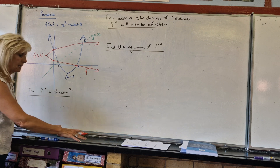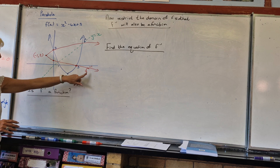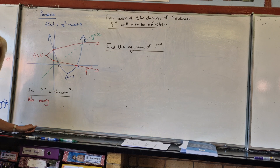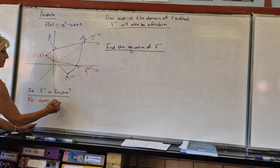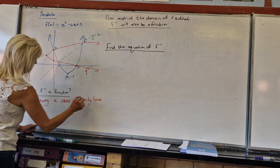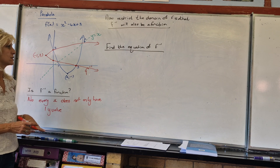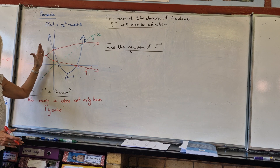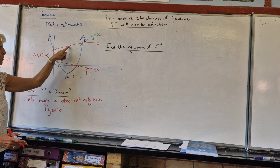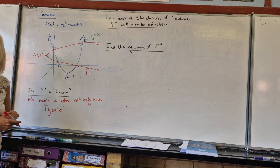We didn't finish completely, so let's do this completely. I want to know whether f⁻¹ is a function. You're going to say the vertical line test: for every x, there's not just one y. If I do the vertical line test, for that specific point, that x has only one y. But for every other x — for instance here — there will be two y's. For every x there's not just one y.